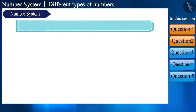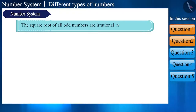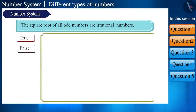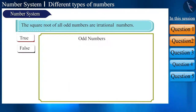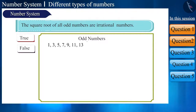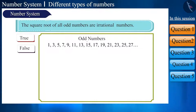The square root of all odd numbers are irrational numbers. State whether this statement is true or false. Let's write odd numbers: 1, 3, 5, 7, 9, 11, 13, and so on up to 27. Now if we take their square roots, these numbers will look something like this.